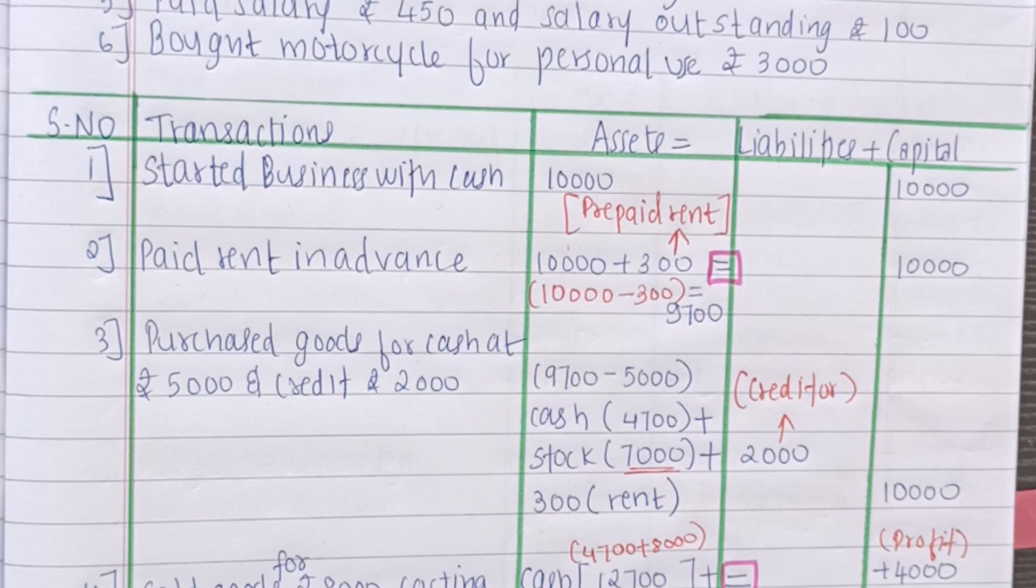So firstly what we will do is we will deduct 300 from 10,000 which will come to 9,700 and plus 300. Plus 300 is for the prepaid rent. The capital will remain unchanged.